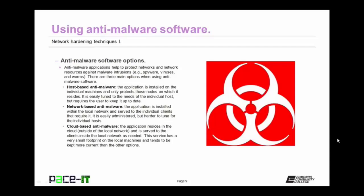Then there's network-based anti-malware — the application is installed within the local network and served to the individual clients that require it. It is easily administered but harder to tune for individual hosts, though the network administrator can ensure it remains up to date. Finally, there's cloud-based anti-malware, where the application resides in the cloud, outside of the local network, and is served to clients as needed. This has a very small footprint on the local machine and tends to be kept more current than the other options, but it is an added cost that must be evaluated.